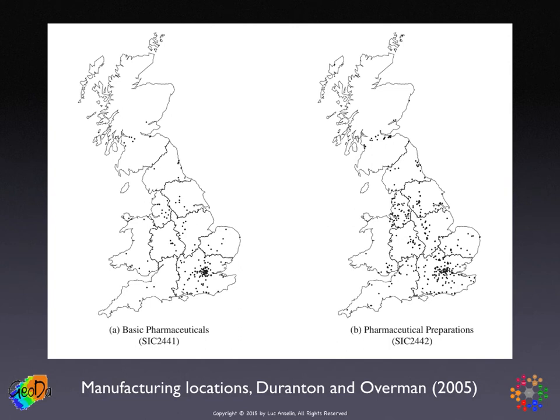A final example is from a fairly recent paper by Duranton and Overman, which has basically been the introduction — or reintroduction — of spatial point pattern analysis in economics. The paper appeared in the Review of Economic Studies and analyzed the localization of different manufacturing sectors in the UK. You see a fairly concentrated pattern for basic pharmaceuticals, but a much broader spread throughout the country for pharmaceutical preparations. This gives you a sense of the types of data we'll be dealing with, and next we'll cover some of the terminology.